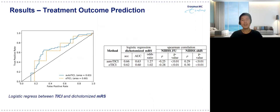To further underpin the value of AutoTK, we compared AutoTK and ETK with respect to the capability of treatment outcome prediction. As you can see from the figure and the table, when predicting the MRS score and NIHSS score, AutoTK is mostly comparable to ETK, if not better.